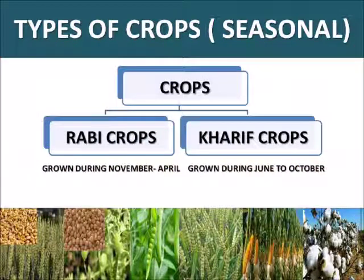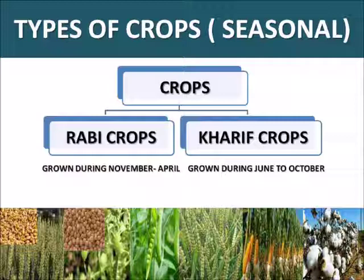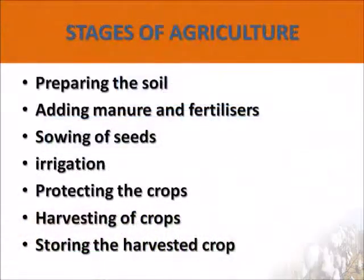Next we have types of crops divided on a season basis. On the basis of season we have two types of crops in our country — the Rabi crops and the Kharif crops. Rabi crops are grown during November to April, that is during winters. Examples include gram and wheat. Kharif crops are grown during June to October.